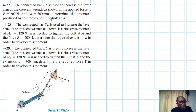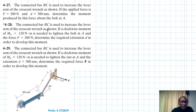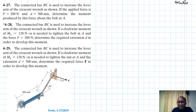Hello, welcome to this interesting screencast. The problem reads: the connected bar BC is used to increase the lever arm over the crescent wrench range as shown. The applied force is 200 newtons and d equals 300 millimetres; determine the moment produced by this force about point A. This problem comes from Engineering Mechanics and Statics, 13th edition by R.C. Hibbeler.